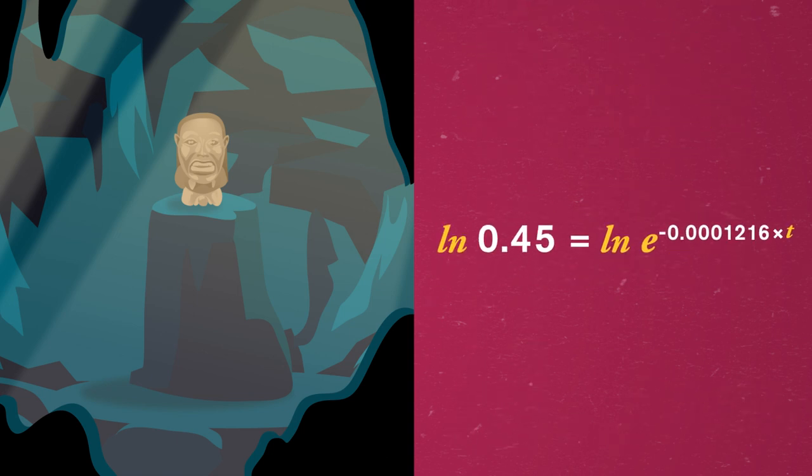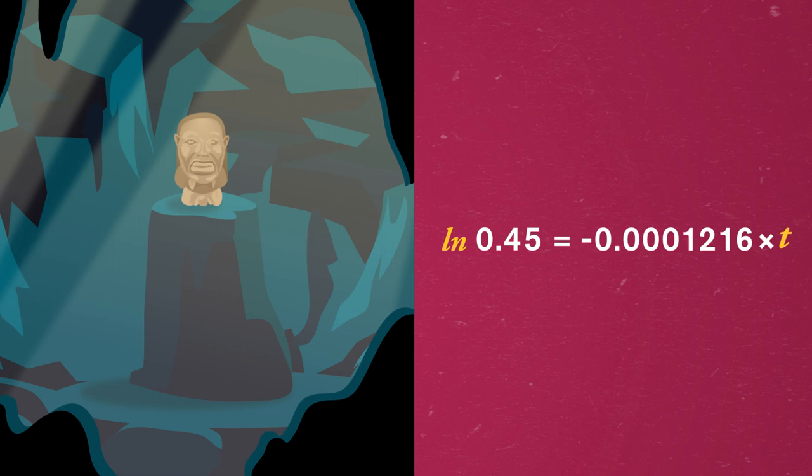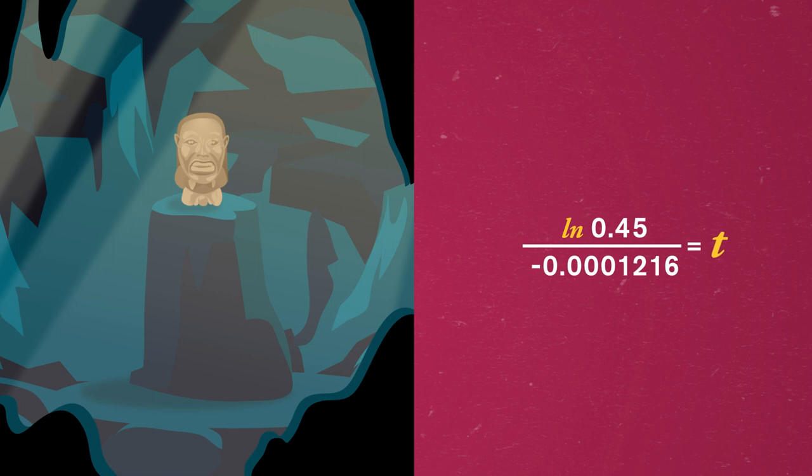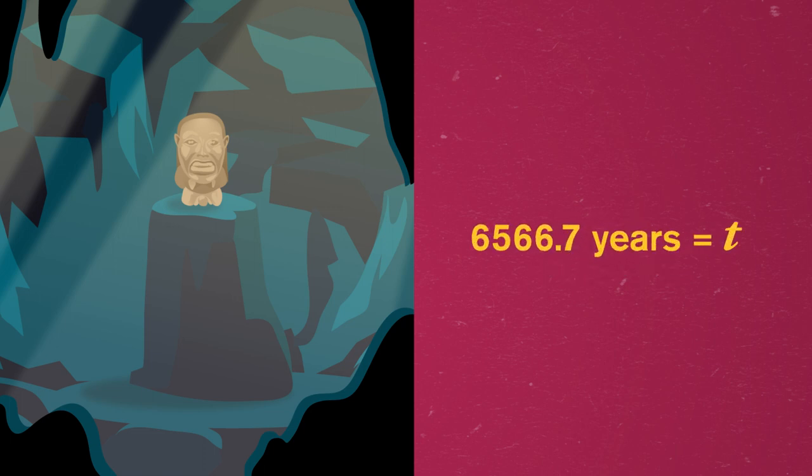So let's hit it with a natural log. The log and e cancel out since log base a of a is 1 for any number a. So solving for time t gives us log of 0.45 over negative 0.0001216. If we calculate that, we get approximately 6566.7 years. Whoa, we need to talk to Indiana Jones about this thing.